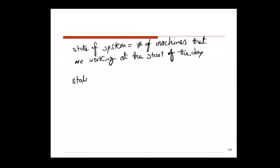What is the state space? The state space is zero, one, or two, because you can have both machines broken — which would be zero machines running — one of the machines broken giving one machine running, or both machines running. So these are the possible values for the state of the system.